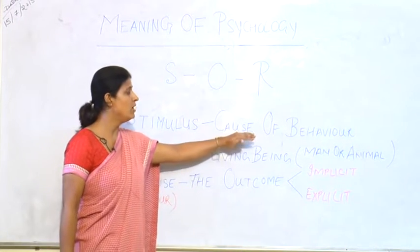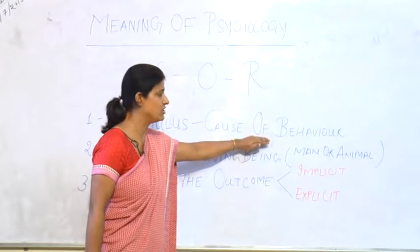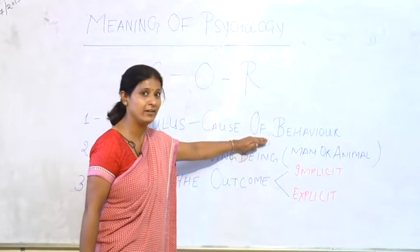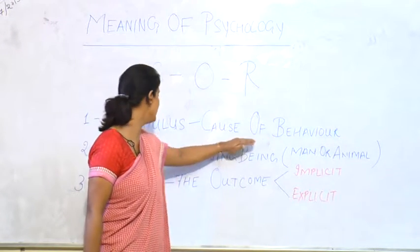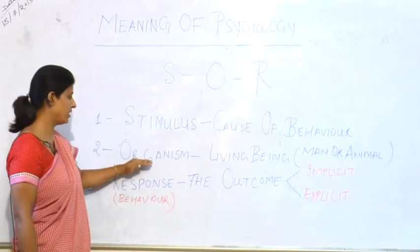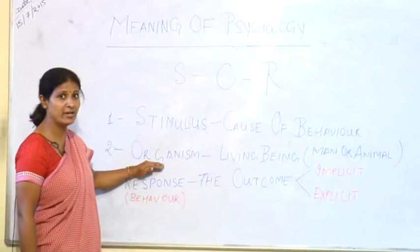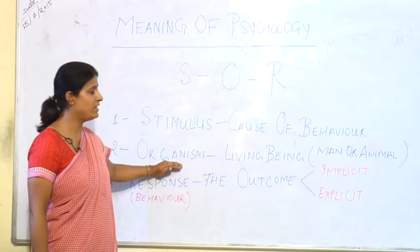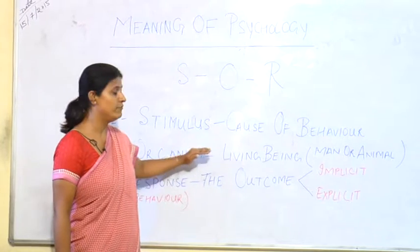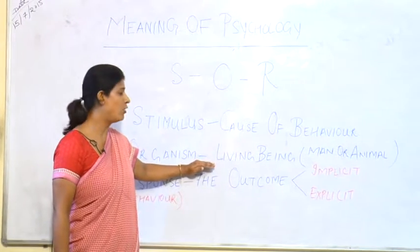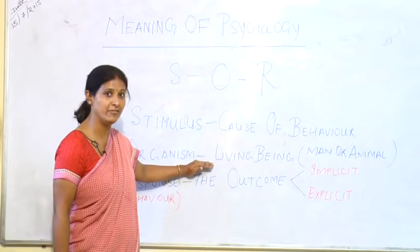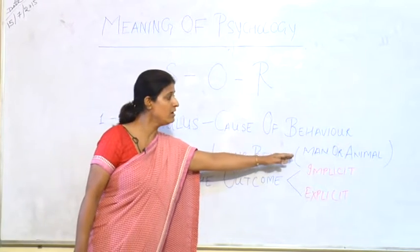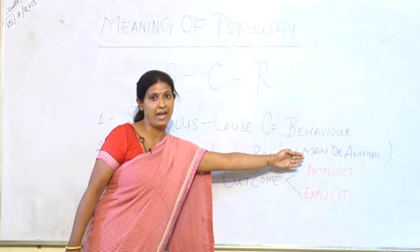The second thing is Organism. Organism means a living being — a living being which outputs behavior. A living being is mainly a human being or an animal.